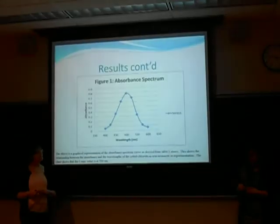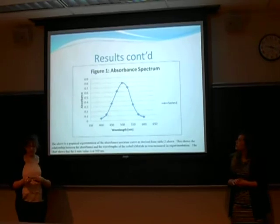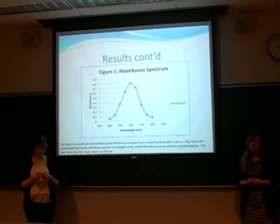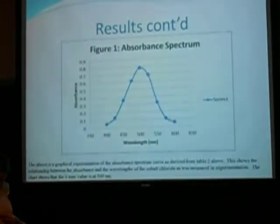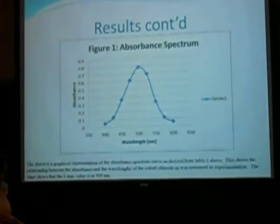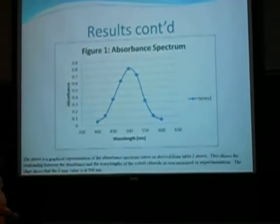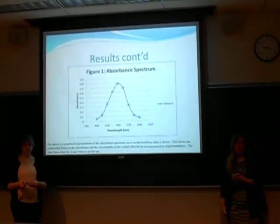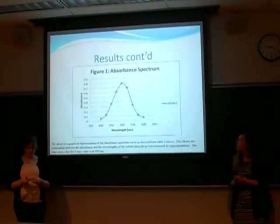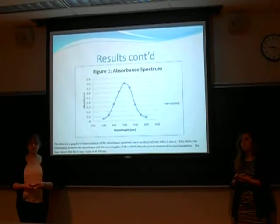Figure one is a representation of the absorbance spectrum curve as derived from table two. It shows the relationship between the absorbance and the wavelengths of the cobalt chloride as was measured in the experiment. By looking at this figure, it is evident that the maximum wavelength was 500 nanometers.